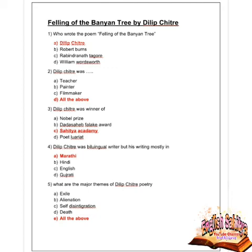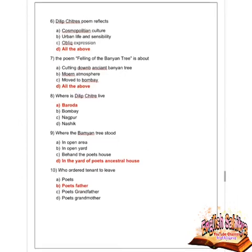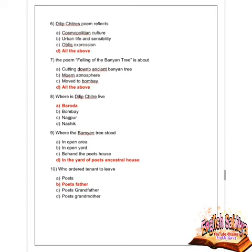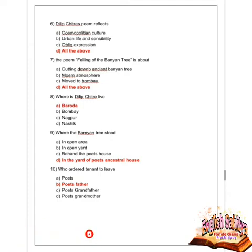Next question: what are the major themes of Dilip Chitre's poetry? Options are exile, alienation, self-disintegration, death, and all of the above. Option D is correct — all of the above. Next question: Dilip Chitre's poem reflects what? Options are cosmopolitan culture, urban lives and sensibility, oblique expression, and all of the above. Option D is correct — all of the above.